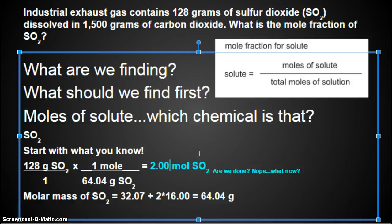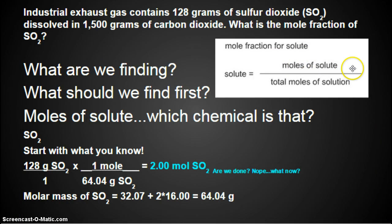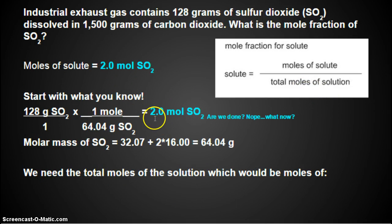No. Because all we have found so far is the moles of solute. Now we have to find total moles of solution. What is this solution made of? It's made of SO2 and CO2. We already did the SO2, so now what do we have to find? We have to find how much CO2 we have. We have 1,500 grams. But what unit do we want the CO2 in? We don't want grams. We need to change it to moles. Alright, so I kind of just shoved all this up here, so we still have it. So we need to find the total moles of the solution, which would be moles of SO2 plus CO2.